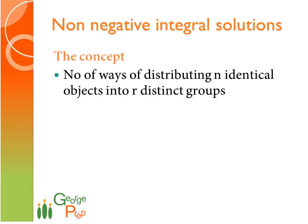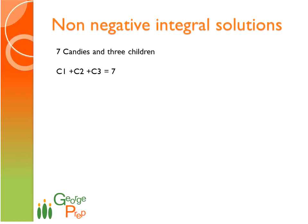Let's learn this concept using an example. We have 7 candies to be distributed to 3 children. C1, C2, and C3 are the number of candies that we are going to distribute to the first, second, and third child respectively, which should sum up to 7.